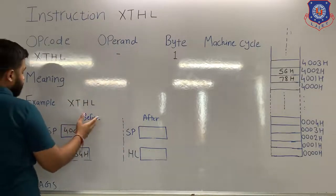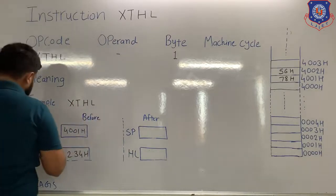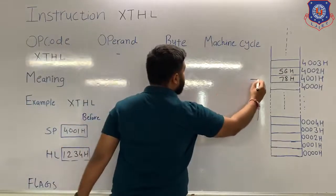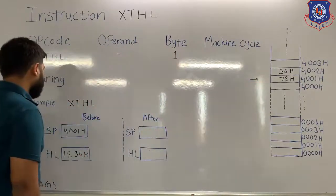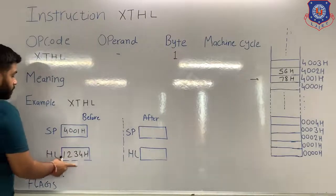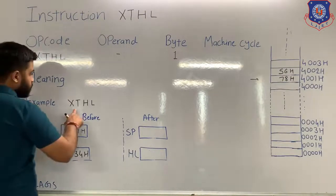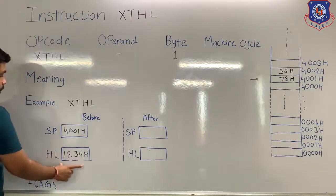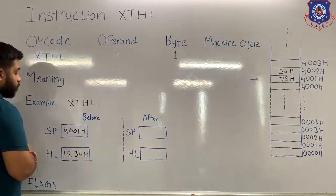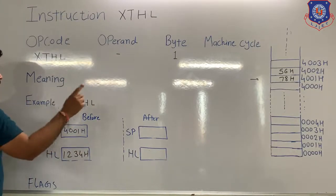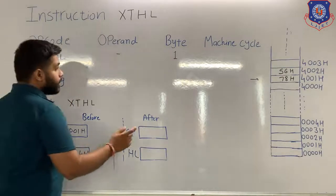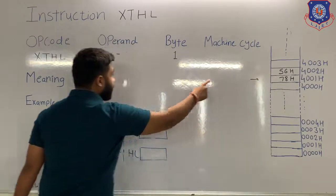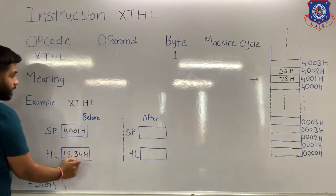Let's see one example of XTHL. Suppose before the execution, the content of the stack pointer is 4001H, so right now the stack pointer is pointing at 4001H. The content of the HL pair is 1234H. When this instruction is executed, the data present in the HL pair will be exchanged with the stack. The data present at 4001H is 78H, and it will be exchanged with the lower byte of the HL pair.